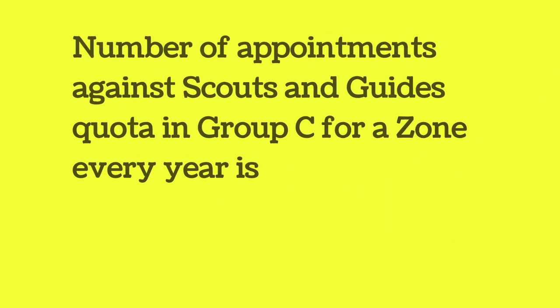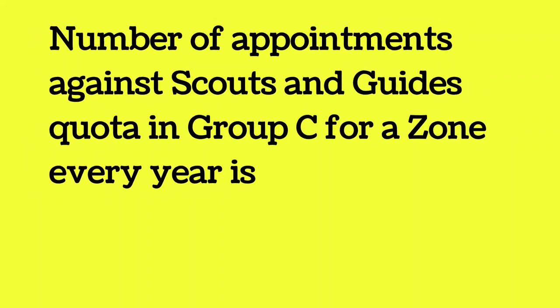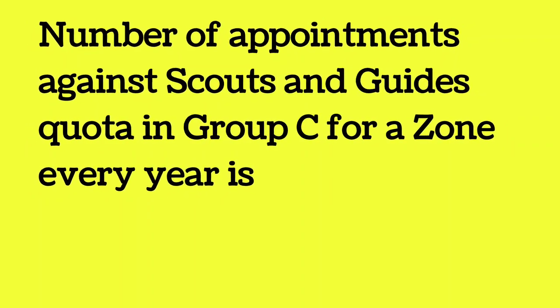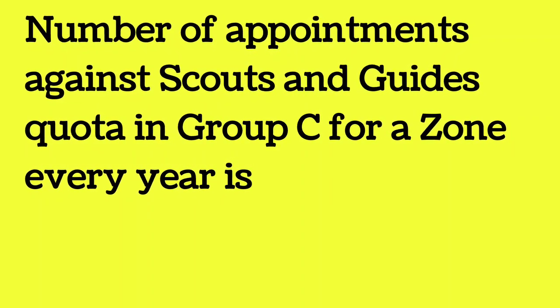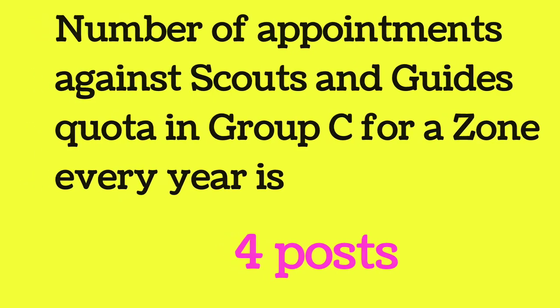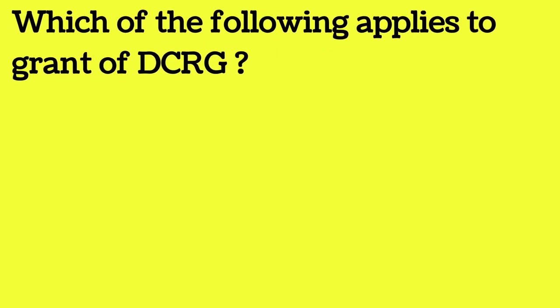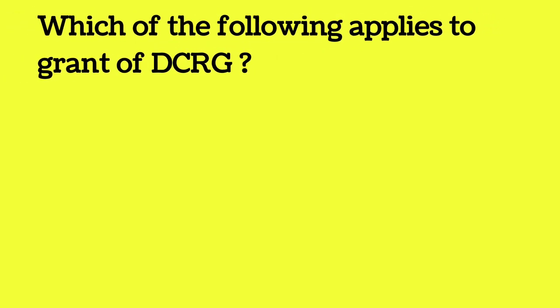The number of appointments against Scouts and Guides quota in Group C for a zone every year is 4 posts. Maximum number for Scouts and Guides quota is 4 posts every year.